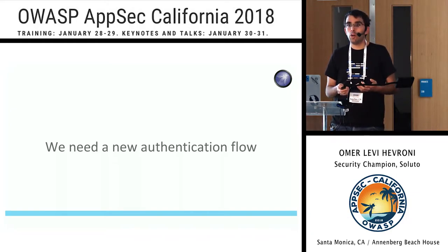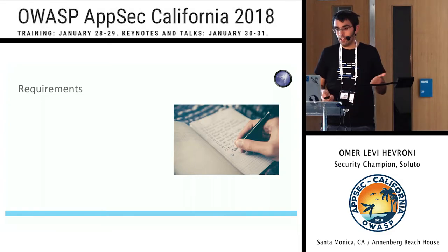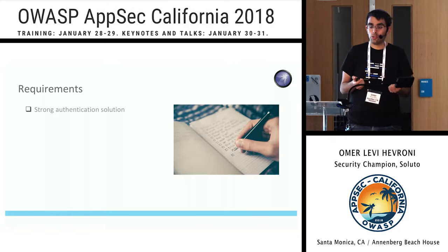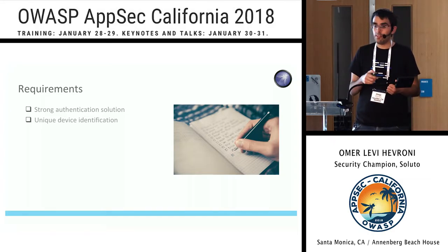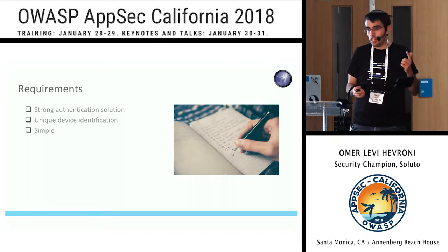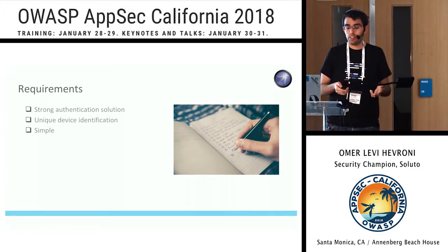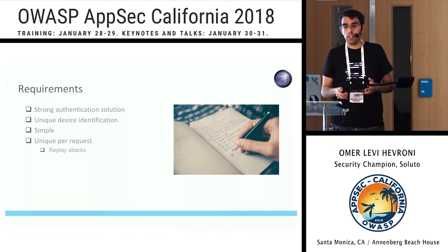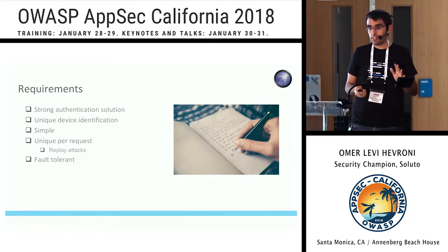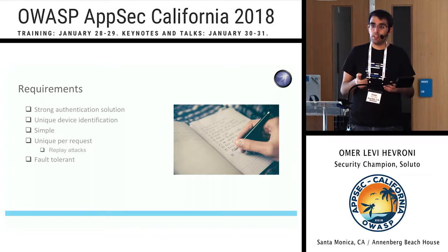If I can come up with a new authentication flow, I could use the full OpenID protocol without any further changes, and also use any OpenID stack available today. So I started to think about what requirements I want from such a flow. The first and most obvious requirement: I want it to be strong. I also want a unique way to identify the device so I can perform authorization. I want it to be simple - simple means less code, fewer bugs, fewer security issues. I want the authentication flow to be unique per request to block replay attacks. And the last requirement: I want it to be fault tolerant, because network requests will fail and I want the client to be able to recover.